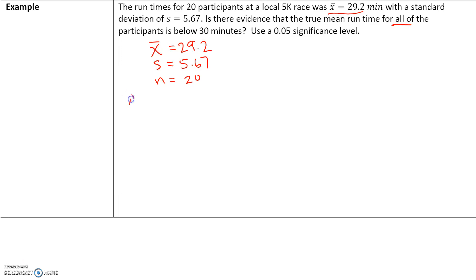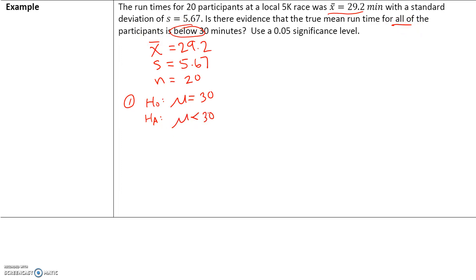First, let's state our null hypothesis and our alternate hypothesis. Our null hypothesis is that the population mean is equal to 30 minutes. The alternate hypothesis is that we want to see if there is enough evidence that the true mean time for all the participants is below 30 minutes. So our alternate hypothesis is that mu is less than 30.